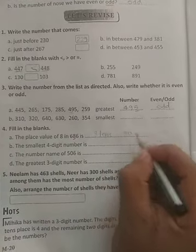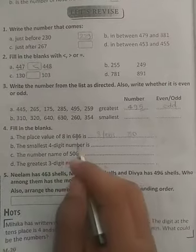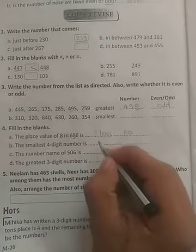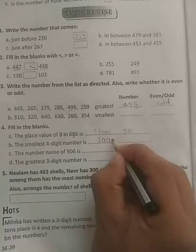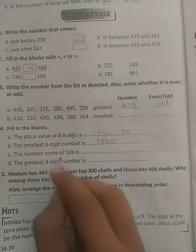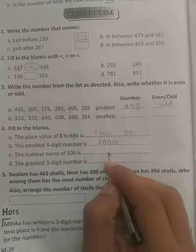The smallest four-digit number is 1000. It is the first and smallest four-digit number. The number name of 506 is, you have to write it in the words. Okay, 506. The greatest three-digit number is 999.